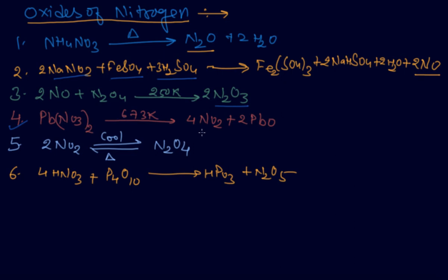Fourth: if you heat lead nitrate, you get NO2, which is a brown gas and acidic in nature. Then N2O4 — it is simply the dimerization of NO2. N2O4 is colorless as a solid or liquid, and is also acidic.